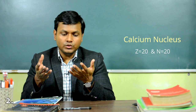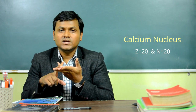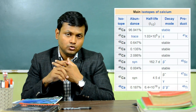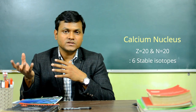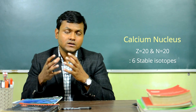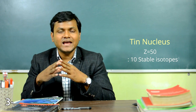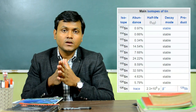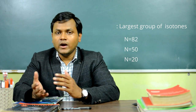Calcium also has double magic numbers — 20 protons and 20 neutrons — and is seen to have six stable isotopes. Isotopes are nucleus species which have the same number of protons but different numbers of neutrons. Tin, whose nucleus has 50 protons, has 10 stable isotopes. Isotones are nucleus species which have the same number of neutrons but different numbers of protons. The largest group of stable isotones is found for neutron number corresponding to 82, followed by 50 and 20.